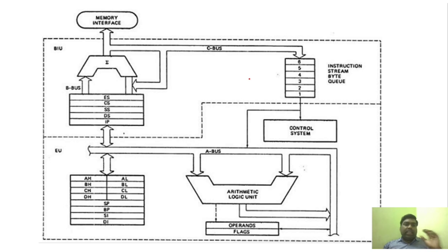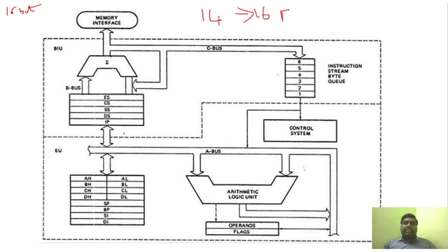This 8086 architecture — as I said, it is a 16-bit processor. Very importantly, it has 14 sixteen-bit registers. It has a 16-bit register set, and the total number of registers is 14.